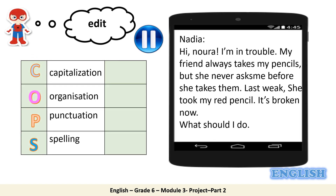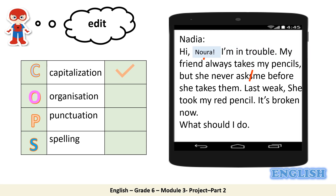I'd like you to pause, read, and edit. Back again — let's check. You capitalized the N in Nura because it's a name. You left a space between the two words 'asks' and 'me.' You substituted the period in the question 'what should I do' with a question mark. And finally, you spelled the word 'weak' correctly.